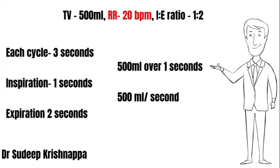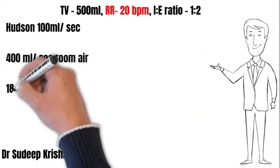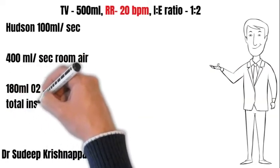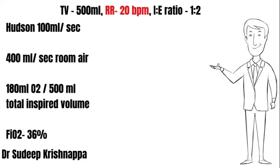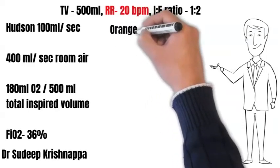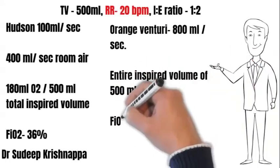Hudson's mask provides only 100 mL per second, so the remaining 400 mL has to be room air. The 400 mL of room air contains about 80 mL of oxygen. So the total oxygen content in the 500 mL inspired is 180 mL — 100 mL from the mask's oxygen and 80 mL from room air — translating to an FiO2 of 36%. The orange Venturi, generating 800 mL per second, meets the entire 500 mL inspired, keeping FiO2 constant at 31%.